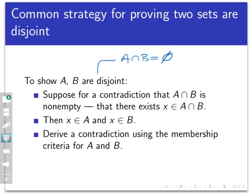So we're assuming the negation of the thing we're trying to prove. To say something is not disjoint means that the intersection is not empty — so choose an element that's in it. That would mean X belongs to A and X belongs to B at the same time. Then we work forward using valid mathematical steps to derive a contradiction, thereby concluding that the assumption that A intersect B is non-empty is false.